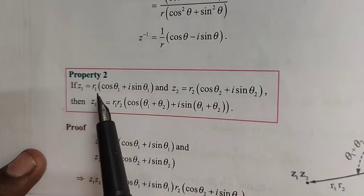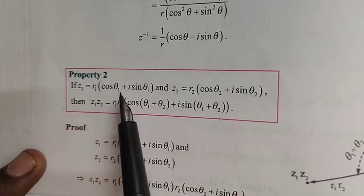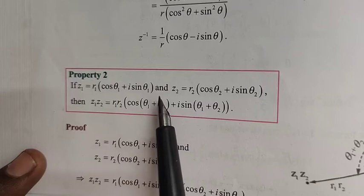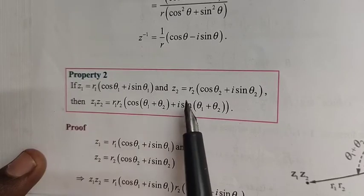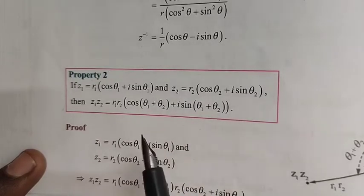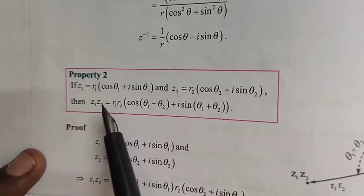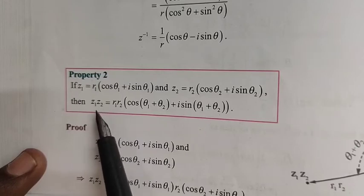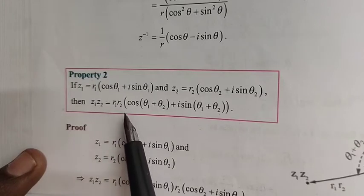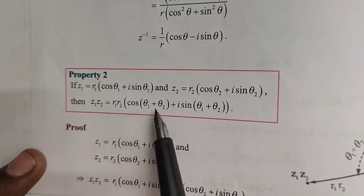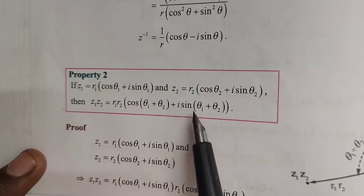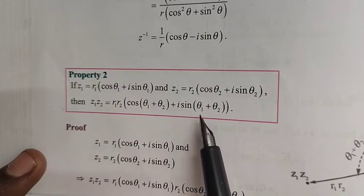If z1 is equal to r1 into cos θ1 plus i sin θ1, and z2 is equal to r2 into cos θ2 plus i sin θ2, then z1 into z2 is equal to r1 r2 into cos of θ1 plus θ2 plus i sin of θ1 plus θ2.